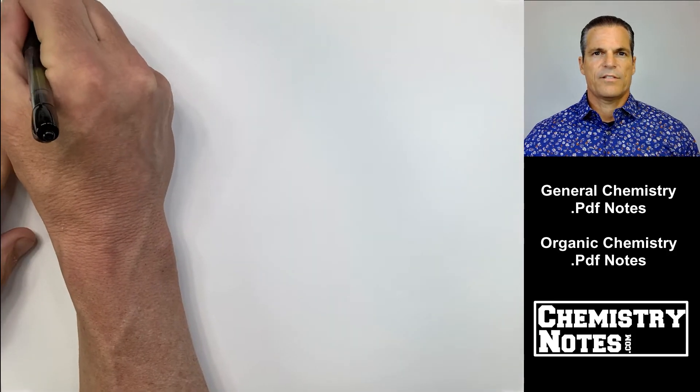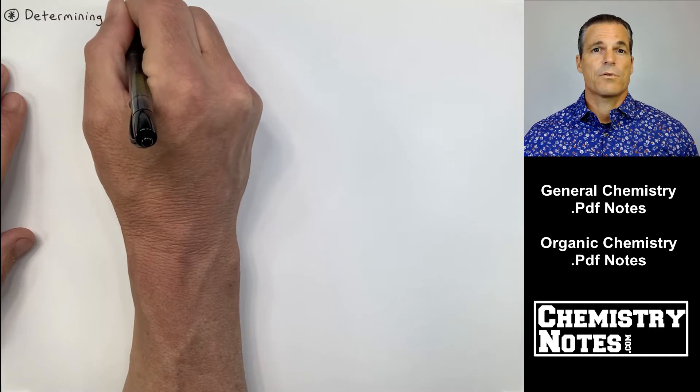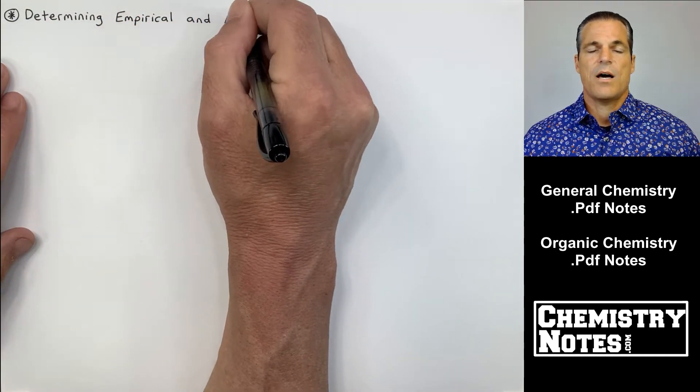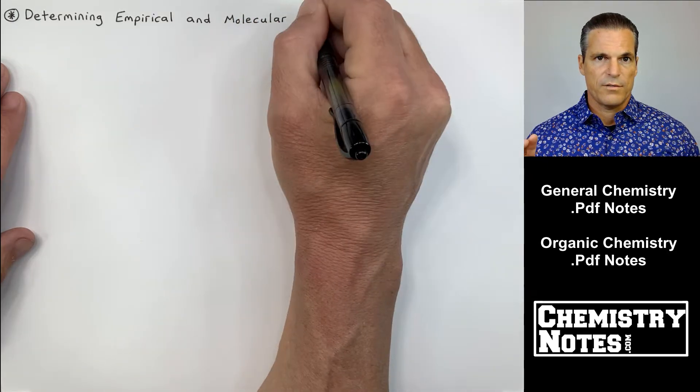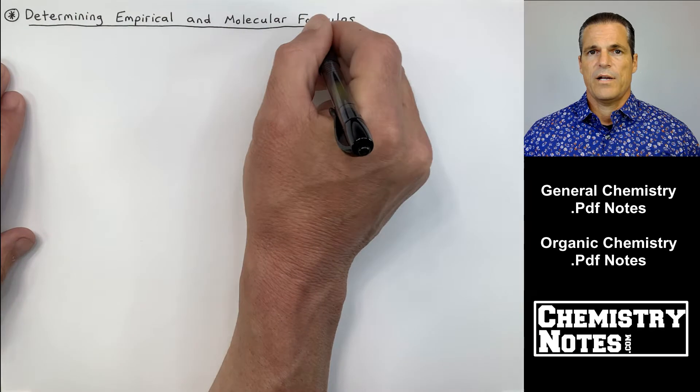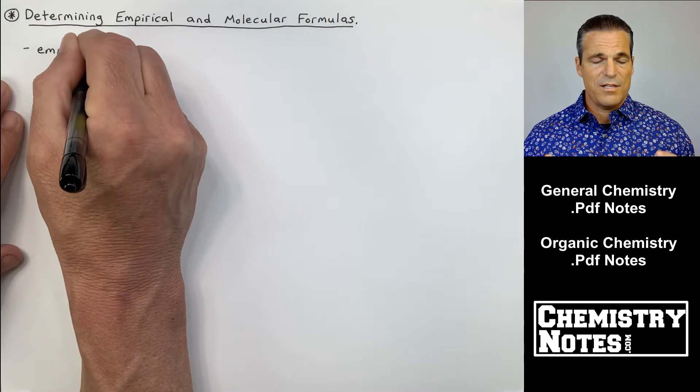Okay, we're back with section three, video number three. Section three is chemical quantities and stoichiometry, and in this video I'm going to devote it to empirical and molecular formulas. I figured the best way was to introduce some terms and then immediately go into some sample problems.